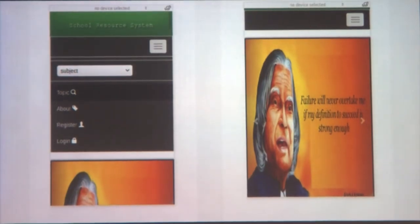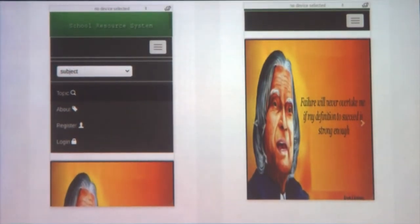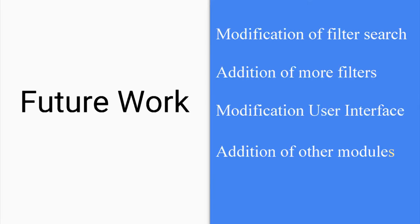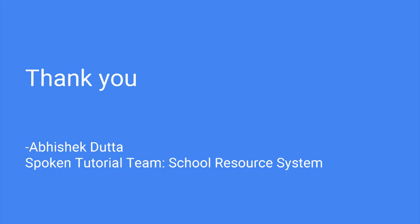We have also tried to make the system responsive so that users with different devices can access it. As for what's next — there are many modifications we can add, like more filter search options, a better UI, and additional modules such as payment modules for contributors. This was the School Resource System — a very basic and simple one. Thank you.